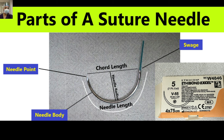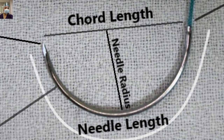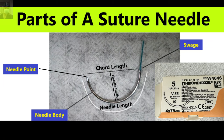This is a needle of number 5 ethibond, which is used basically in thoracotomy surgery. This is one of the thickest materials available — number 5, made of polyester. The different parts of the needle: the core length is from the swage end — that is basically the suture end — to the tip. That is core length.